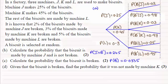Okay, welcome back. We need to write the probability that it's not made by machine K, so that's K prime, given that the biscuit is broken. You should be familiar with this concept of conditional probability.